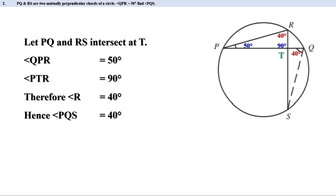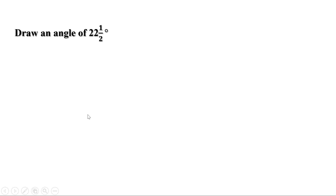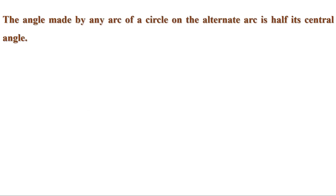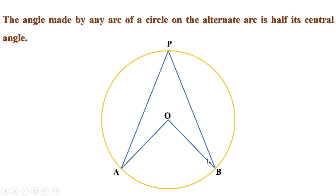Today let us learn some applications of what we have learned. Suppose we have to draw an angle of 22 and a half degrees. We know it is not possible to draw it using a protractor. In a previous standard, we learned that by drawing an angle of 45 degrees and drawing its bisector, we can make an angle of 22 and a half degrees. Here we are doing it in a different way, using the theorem that the angle made by any arc of a circle on the alternate arc is half its central angle.